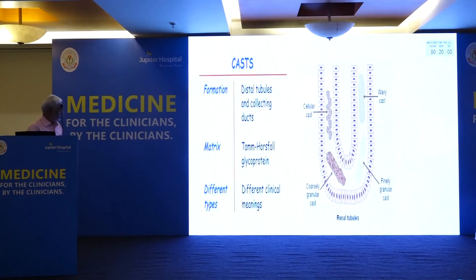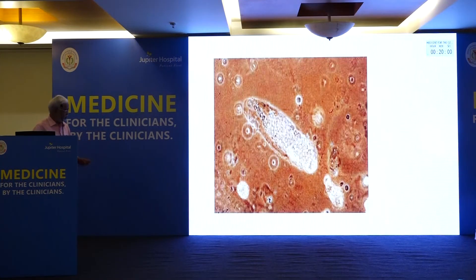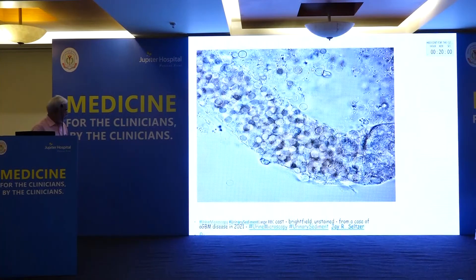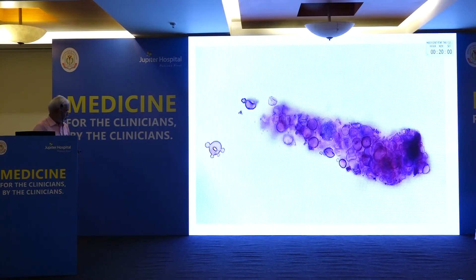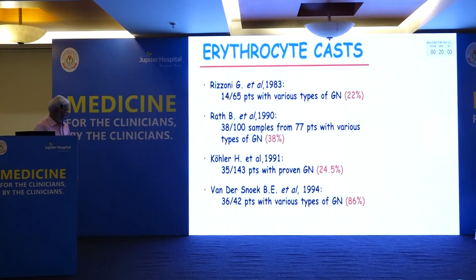Casts are formed in the tubules, particularly the distal tubules. The matrix is Tamm-Horsfall protein, and different cells get embedded in it. RBC casts are suggestive of glomerular origin of hematuria. However, the sensitivity of RBC casts is very low — only 22–30% of patients with glomerular diseases will have this cast.